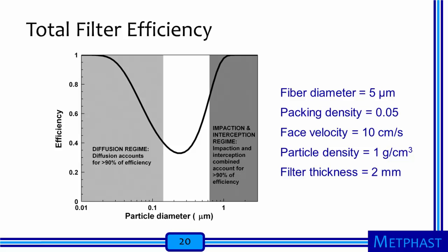This minimum efficiency at 200 to 300 nanometers is why HEPA filters are tested for efficiency using 300 nanometer diameter droplets. These curves are typical for filters that collect particles by mechanical filtration mechanisms. When we use the single fiber efficiency to predict total filter efficiency with a filter thickness of 2 millimeters, we get a curve showing high efficiency for large particles and very small particles, with a minimum efficiency at a diameter between 0.2 and 0.3 micrometer, or 200 to 300 nanometers.